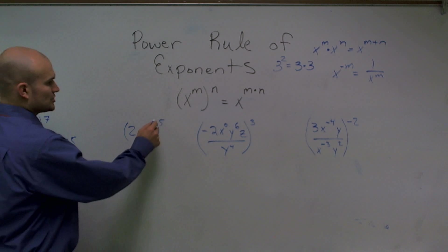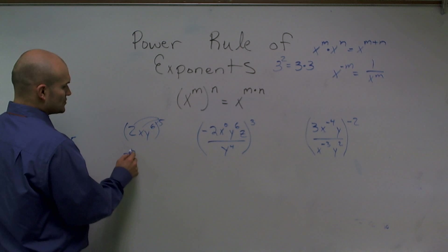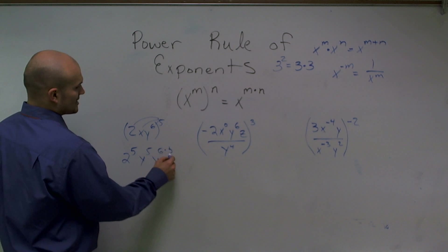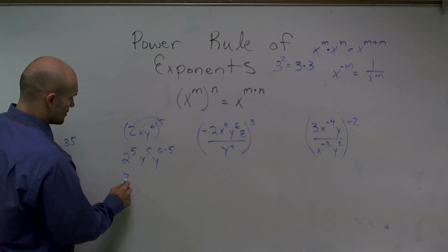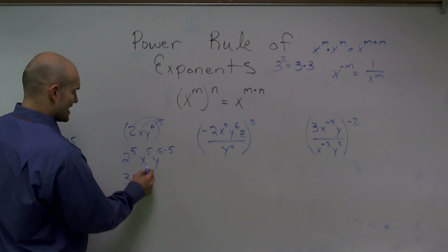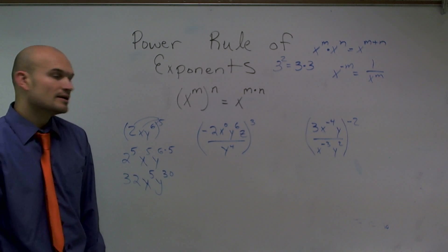Here, I need to make sure I distribute my 5 to each one of these terms. So I have 2 to the 5th power, x to the 5th, and y to the 6th times 5. 2 to the 5th power is 32, x to the 5th power, and then y to the 30th.